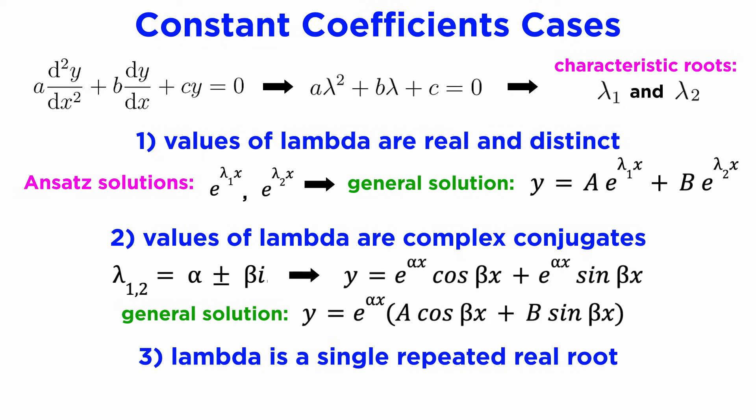The third and final case is if the characteristic equation has a single, repeated, real root. In this case, we will only actually have one ansatz, which is just e to the lambda x, so we can't use the principle of superposition. The good news is that it's an easy fix. Whenever we have a repeated root, we can just multiply our ansatz by x to get a linearly independent function that is still a solution to our DE.